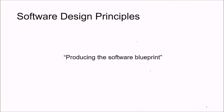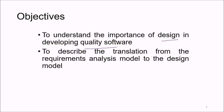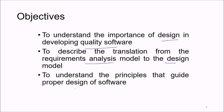We are looking at software design principles that produce the software blueprint. The most important part of software development is the software design, because if the design is good, you can assume that what you are coding will be the best. We will see and try to understand the importance of design in developing quality software. Design is directly related to and reflected in quality. We will describe the translation from the requirement analysis model to the design model, and understand the principles that guide us for a proper design.